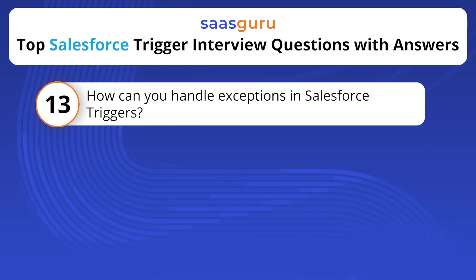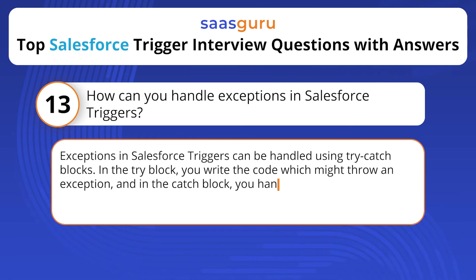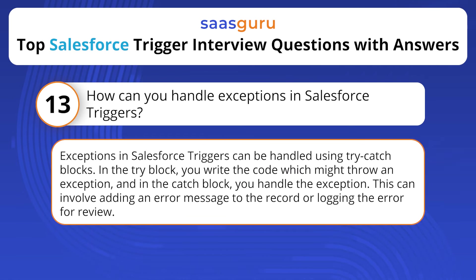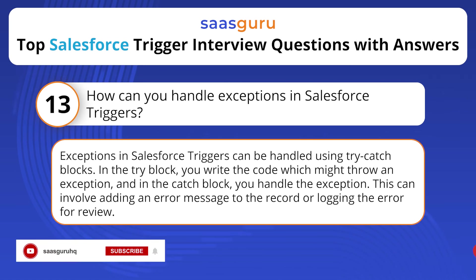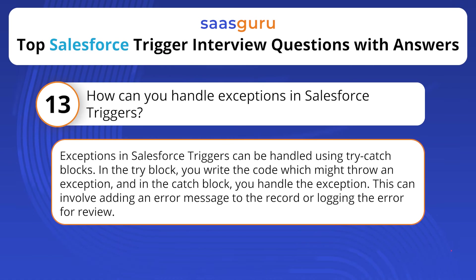How can you handle exceptions in Salesforce triggers? Exceptions in Salesforce triggers can be handled using try-catch blocks. In the try block, you write the code which might throw an exception, and in the catch block you handle the exception. This can involve adding an error message to the record or logging the error for review.